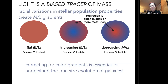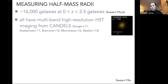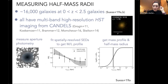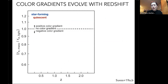We went out to measure these color gradients in a systematic way for a large sample across redshift. Our sample now includes quite a few galaxies at redshift less than about 2.5, all in the CANDELS deep fields with multiband high-resolution HST imaging convolved to the same PSF. We perform spatially resolved SED fitting combined with forward modeling to account for the PSF. The details are in our 2019 paper, and I'm happy to answer methods questions at the end.